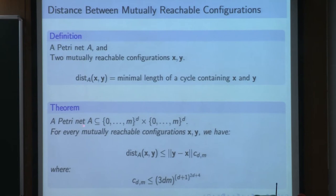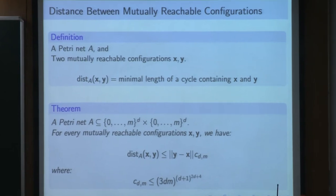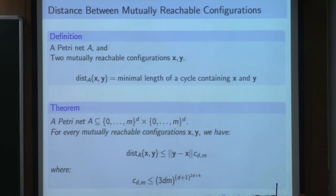What Serge was looking for was something that explained the distance between the two configurations, defined as the minimal length of a cycle in the reachability graph that contains both configurations. His question reduced to providing a bound on the distance that is linear with respect to the Euclidean distance between X and Y. In the proceedings, I proved that if you have a Petri Net where all values are bounded by some M, then for every pair of mutually reachable configurations X and Y, the distance between X and Y is bounded by the norm of Y minus X times a constant of a specific form - a polynomial in M where the degree is doubly exponential.